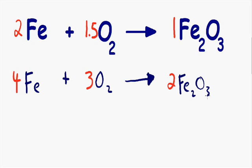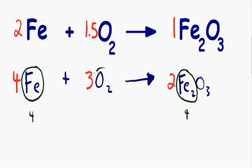Now we have completely balanced the equation. Let's double check to make sure we got the right answer. On the left-hand side we have one atom of iron multiplied by four molecules, giving us four total iron. On the right-hand side we have two atoms of iron multiplied by two molecules, which also gives us four total iron. Now let's check oxygen: on the left-hand side we have two atoms of oxygen multiplied by three molecules, giving us six total oxygen. On the right-hand side we have three atoms of oxygen multiplied by two molecules, which also gives us six total oxygen. So we have four irons and six oxygens on both sides — the equation is balanced.